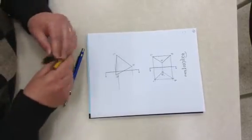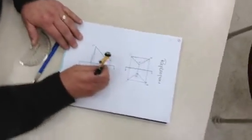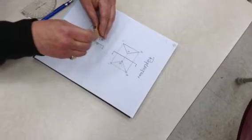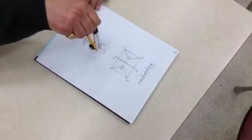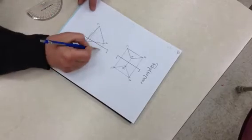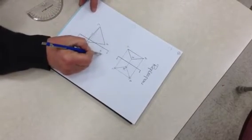I'm going to now locate point A. I jab the compass into the reflection line, open the point of the pencil to point A, and there's my A prime. I'm going to label it right away.